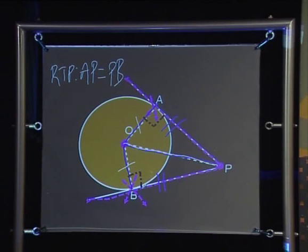This means that the angles are 90 degrees and equal to each other. This means that the two triangles are congruent and so their remaining corresponding parts are equal and so AP equals BP.